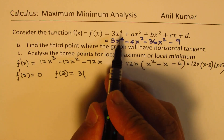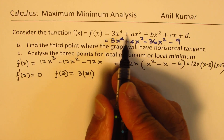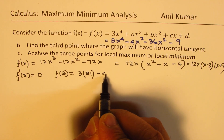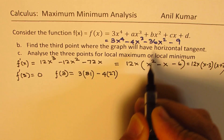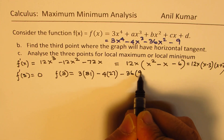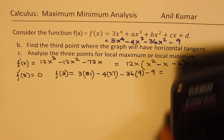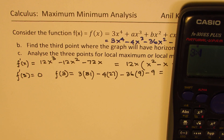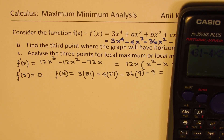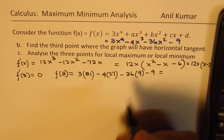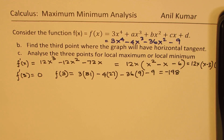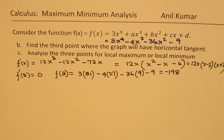To find the y-coordinate, we calculate f(3) = 3(81) - 4(27) - 36(9) - 9. Using a calculator: 243 - 108 - 324 - 9 = -198. So the third point is (3, -198).